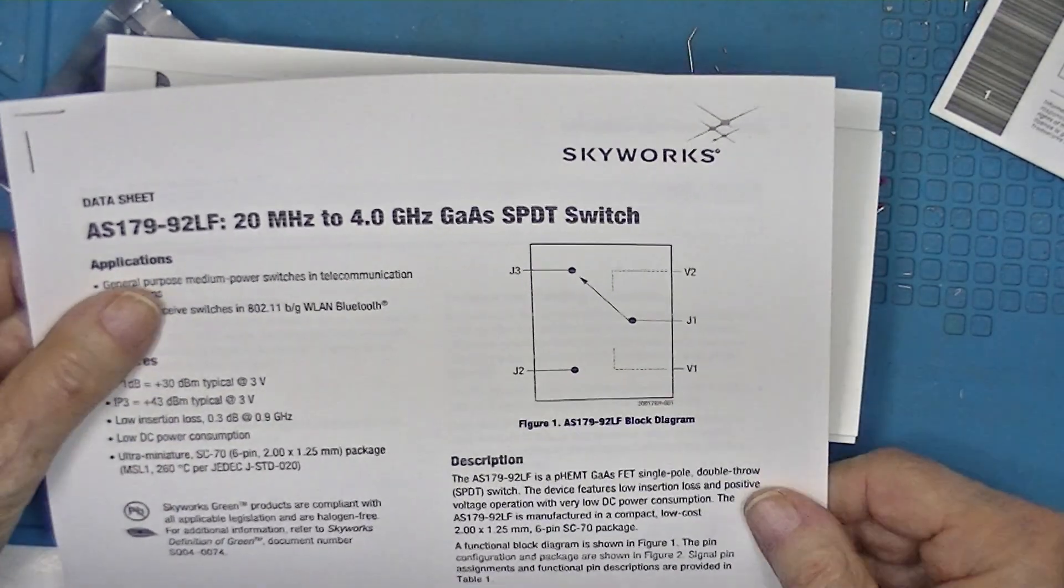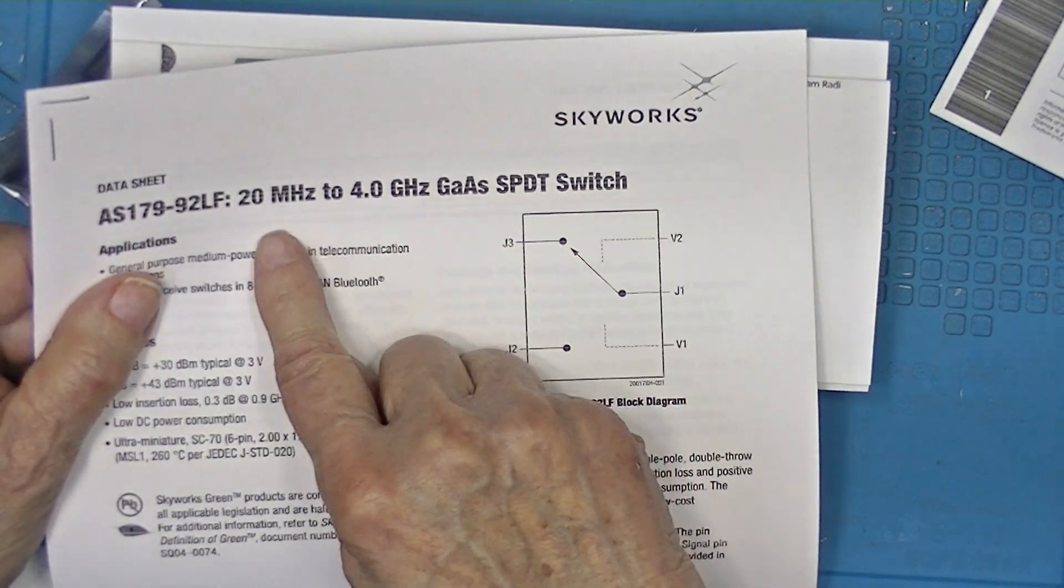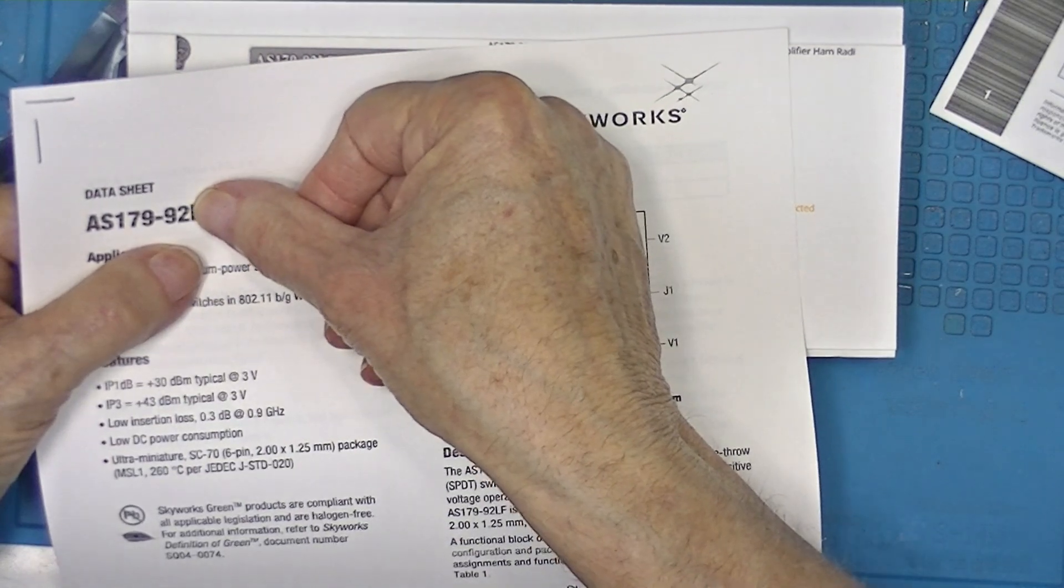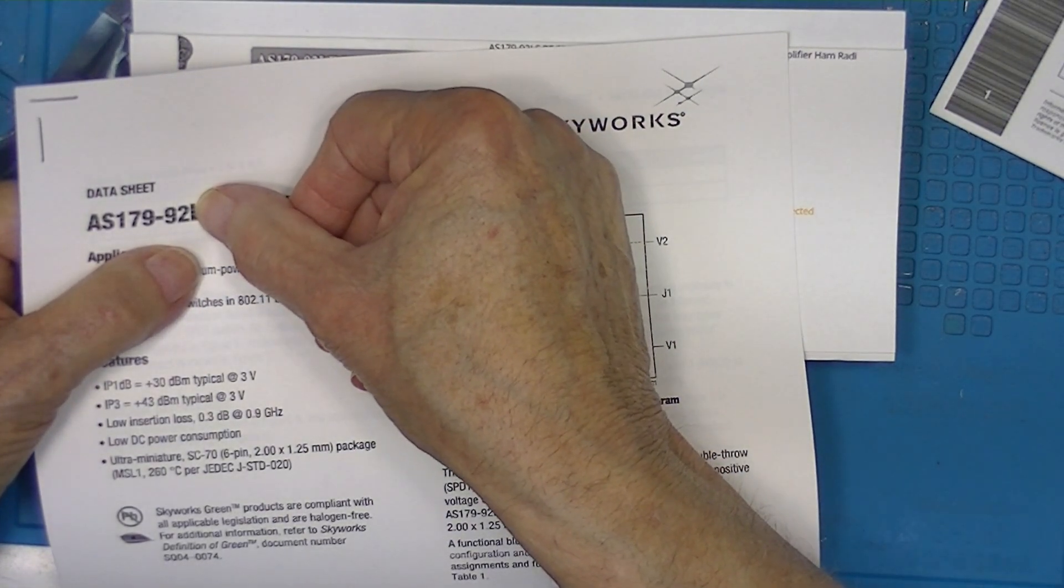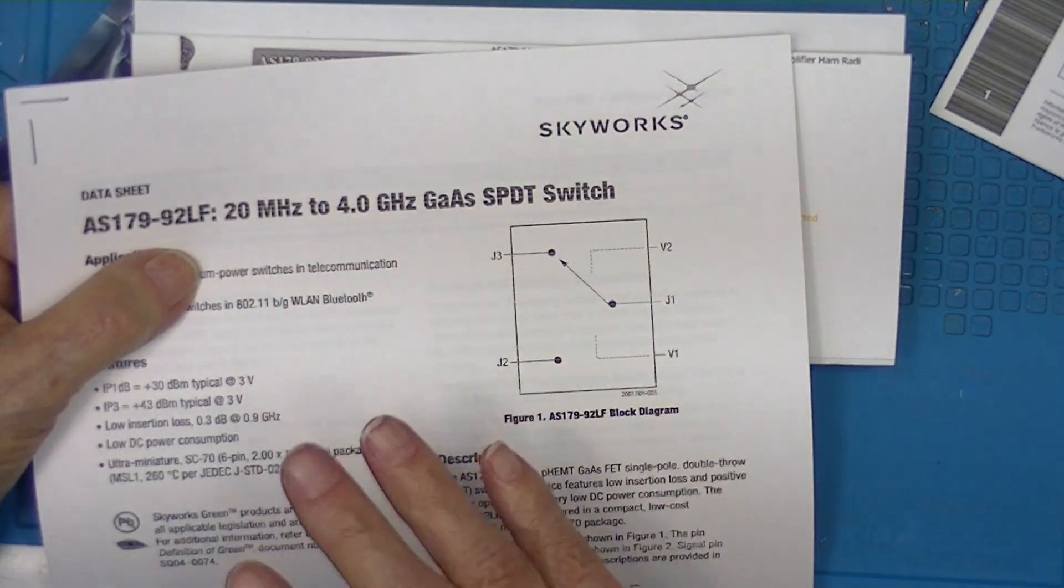This device, made by Skyworks, is advertised as 20 megahertz to 4 gigahertz. The predecessor to this was the 179-92. The LF is supposed to be an identical replacement.